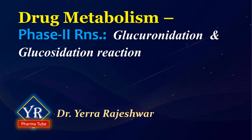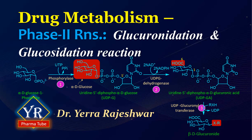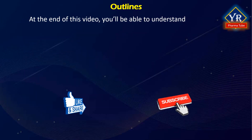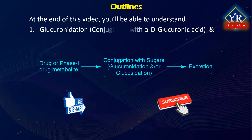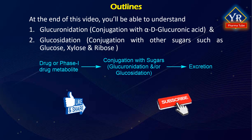In this lesson, we shall try to understand the first type of phase 2 conjugation reactions of drug metabolism, that is the conjugation of sugars, which include the glucuronidation and glucosidation reactions. At the end of this video, you will be able to understand the glucuronidation and glucosidation reactions of phase 2 drug metabolism.